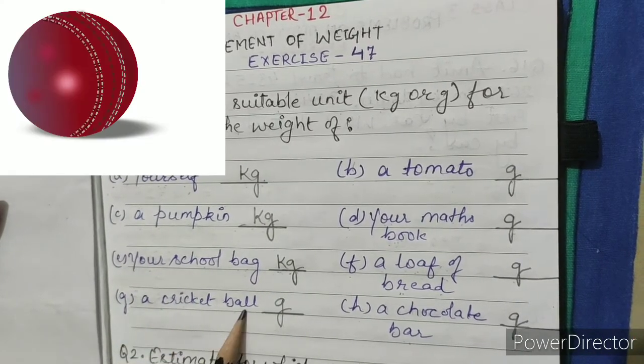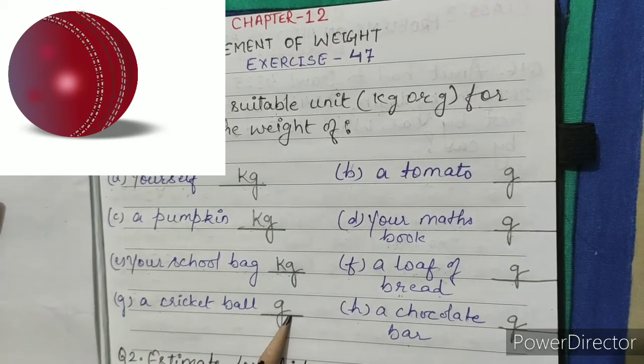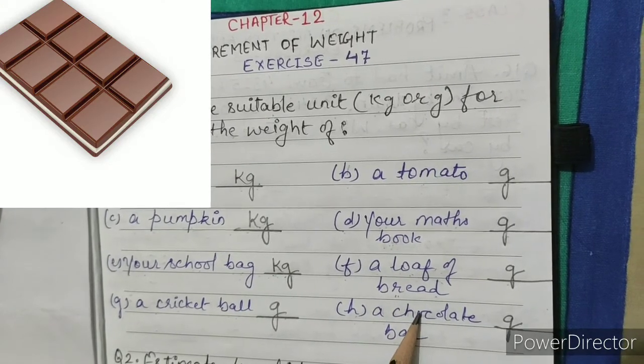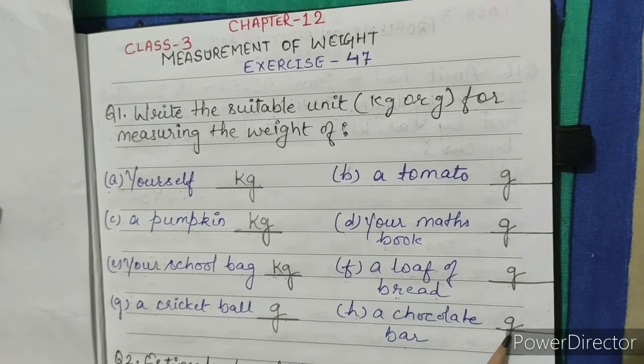G. A cricket ball - we measure the weight of a cricket ball in g. H. A chocolate bar - we measure the weight of a chocolate bar in g.